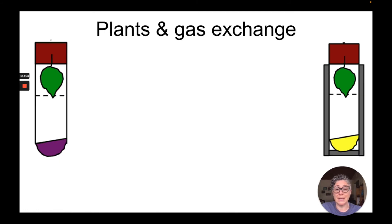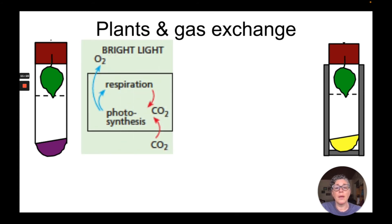Let's take a look at plants and gas exchange. The leaf that turned the hydrogen carbonate indicator purple is a leaf that is in bright light. That is a plant or a leaf that is doing both photosynthesis and respiration. Photosynthesis is going to use carbon dioxide and produce oxygen. Respiration is going to produce carbon dioxide and use oxygen.